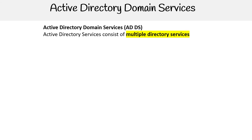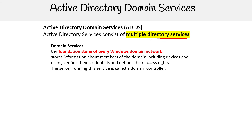We have Active Directory Domain Services, shortened to ADDS. These are services that consist of multiple directory services. I know it gets confusing because there's directory service and then there's directory services — these are services within a directory service. Domain services are the foundation of every Windows domain network; they store information about members of the domain, including devices and users, verify credentials, and define access rights. The server running this service is called a domain controller.